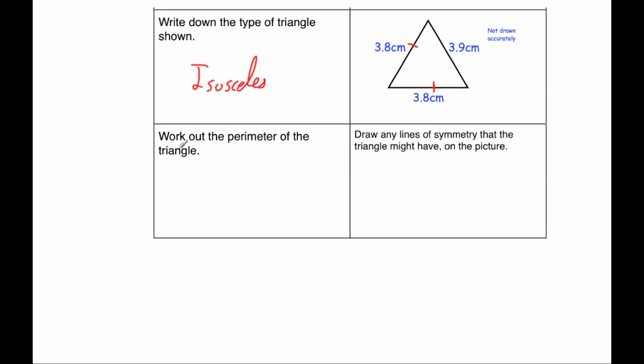And the next question says, write down the perimeter of the triangle. So to get to perimeter, we'll add up the three sides we've been given. So it's going to be 3.9 plus 3.8 plus 3.8. And when we do that, 9 plus 8 is 17. Plus 8 is 25. So put the 5 down, carry the 2. 3 plus 3 plus 3 is 9. Plus 2 is 11. So the answer is 11.5.